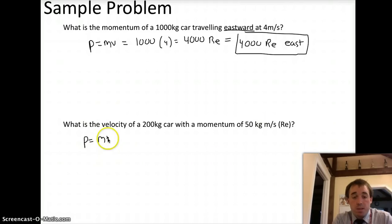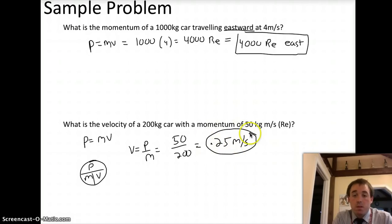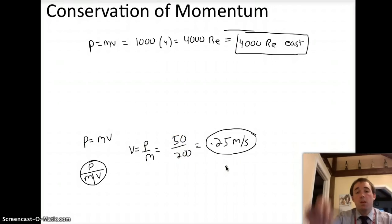What is the velocity of a 200 kilogram car with a momentum of 50 kilogram meters per second, or 50 recors? Well, P equals M times V, but we can rewrite that with our circle, P, M, V. We're solving for V. So it's going to be P over M, which is 50 divided by 200, which is going to be 0.25. And the units are going to work out to be the units of velocity, so 0.25 meters per second.